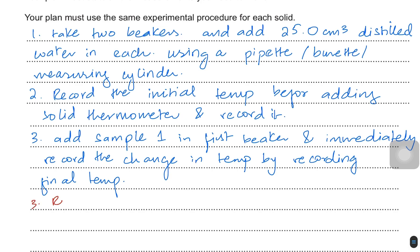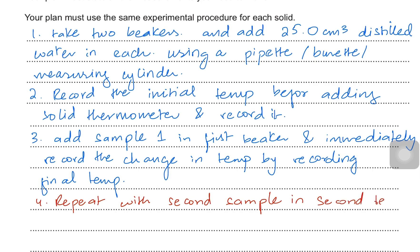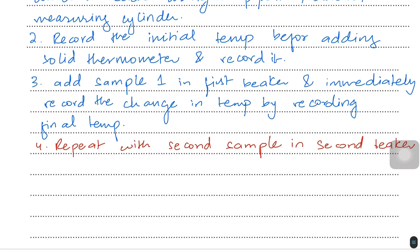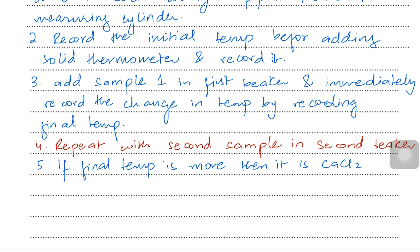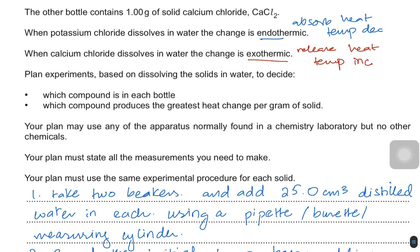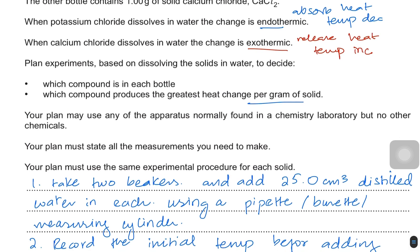Repeat with the second sample in the second beaker. This way you have found out which is which. If the final temperature is higher, it is calcium chloride; if the final temperature is lower, it is potassium chloride.